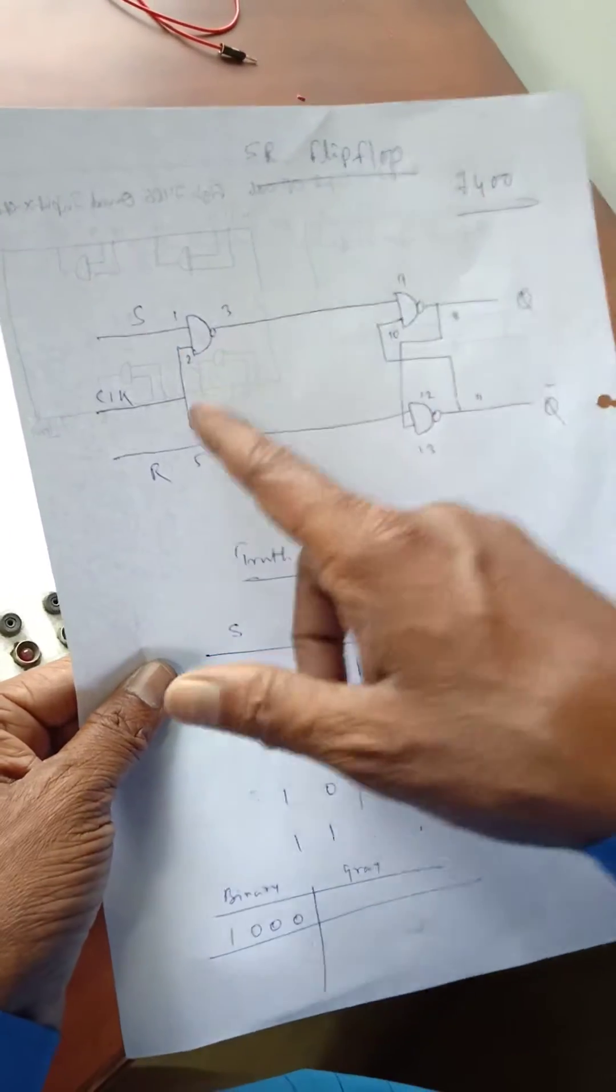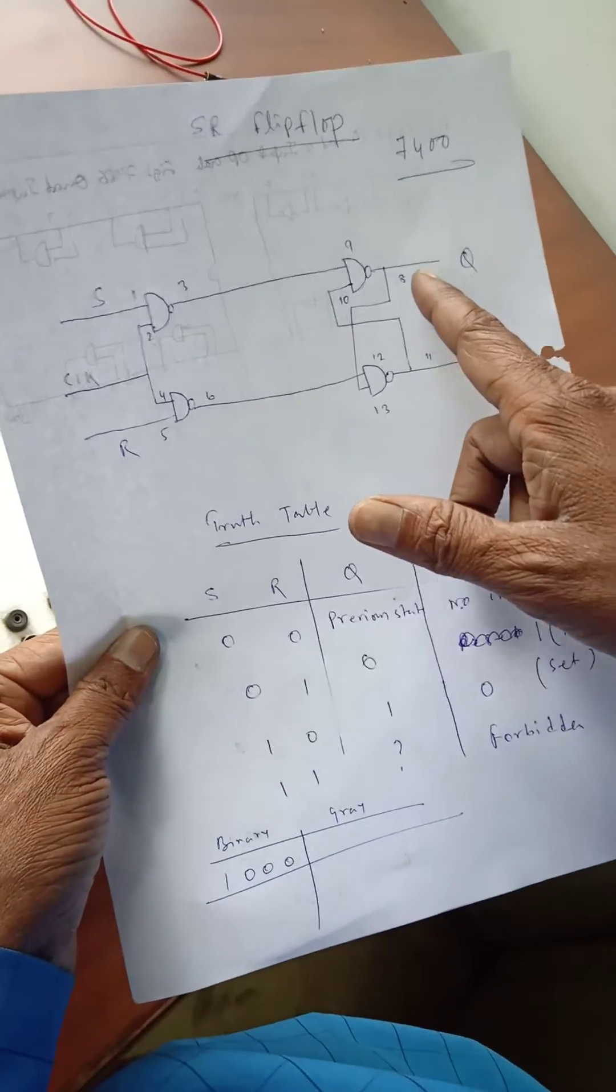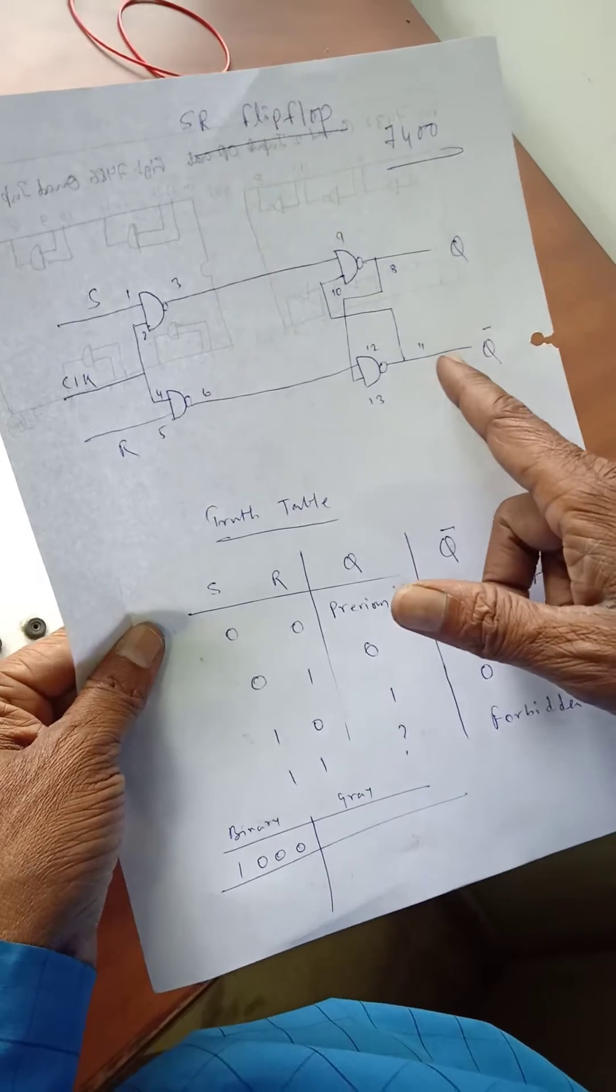This is 1, 2, 3, 4, 5, 6, and in this way you have to connect in your trainer kit. So finally you will get the output from pin number 8 and you will get the complement output, that is pin number 11.